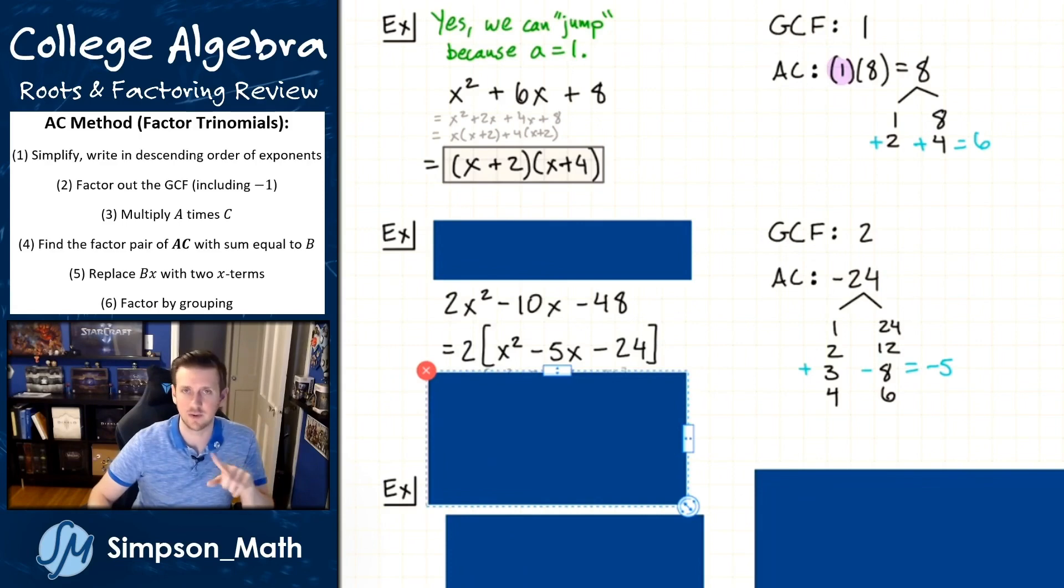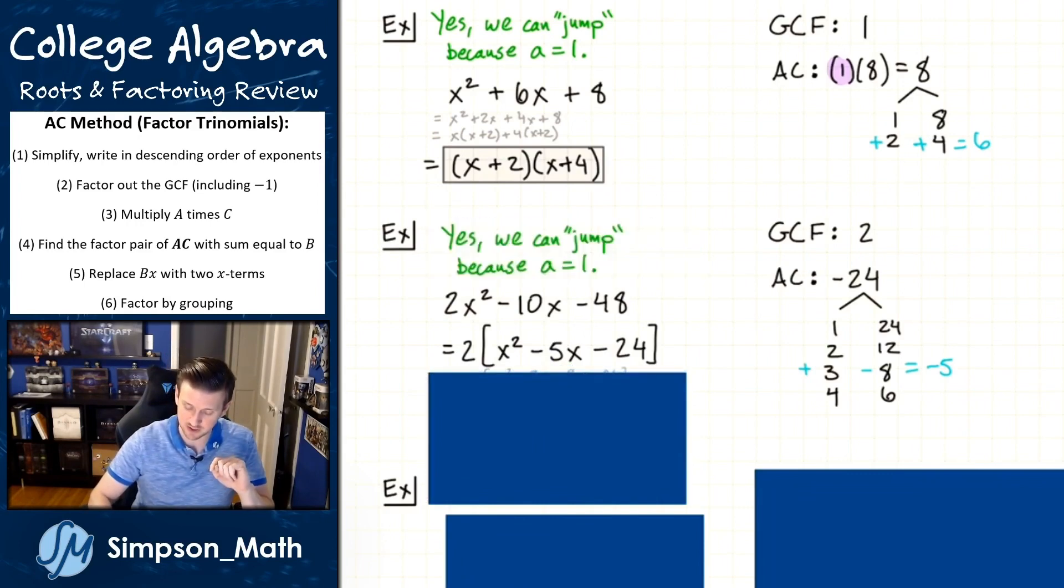One x² - 5x - 24. One x squared, that A is one. So therefore, yes, we are able to jump.